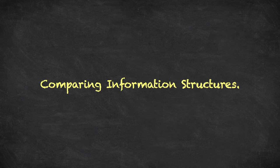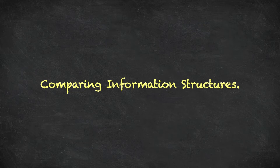So far, we've developed the idea that information structures are partitions of the state space, which captures the idea that information is a reduction in uncertainty. We're now going to have a look at the idea of comparing information structures — we'd like to be able to say that one person has better information than another. What does this mean when we're talking about partitions of a state space as an information structure?